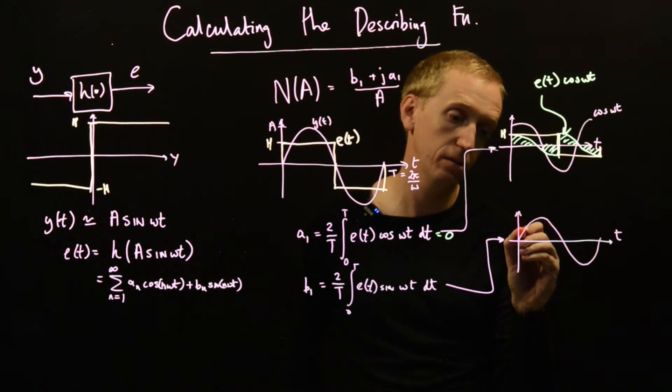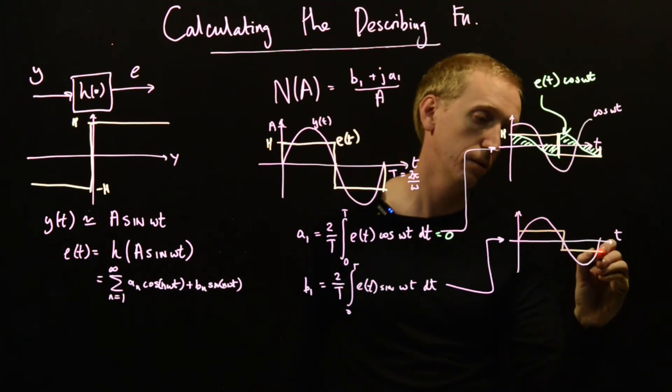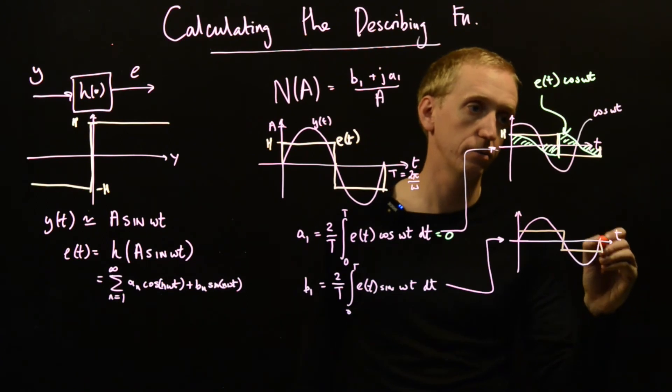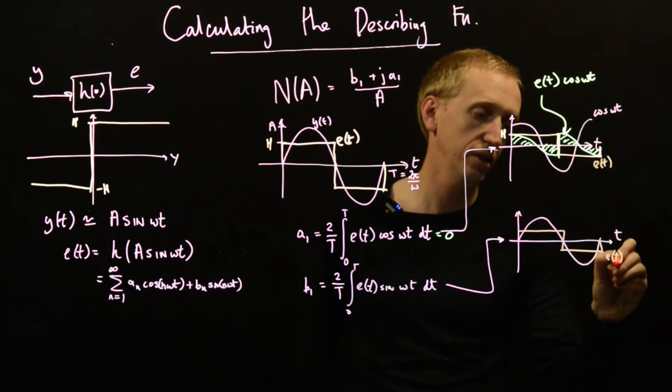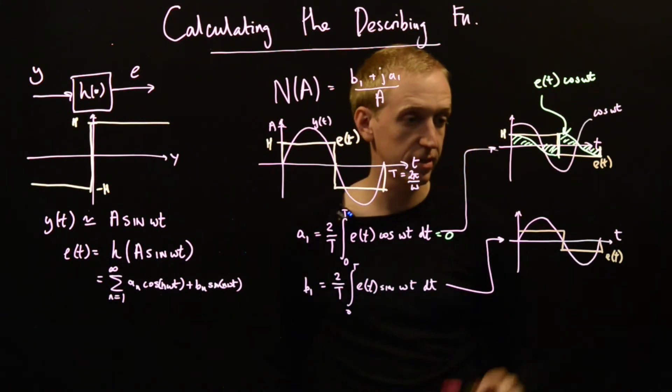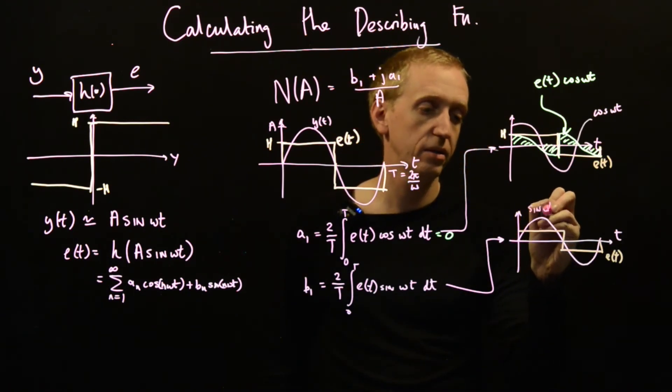Well, this time we have a sinusoid. E(t) is the same. So e(t) now looks like that. So I didn't label it on here. So orange was e(t). This is e(t). And then this is sin(ωt).